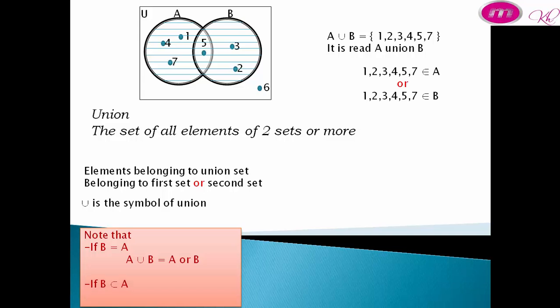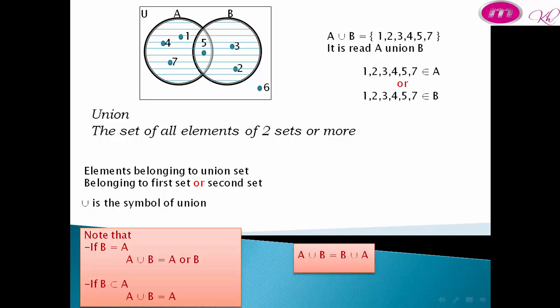If B is a subset of A, then A union B equals A. Also, A union B equals B union A (union is commutative), and A union A equals A.